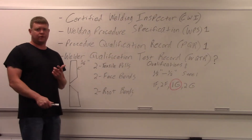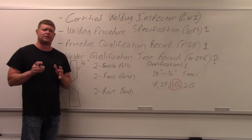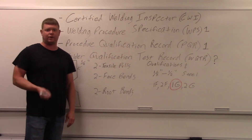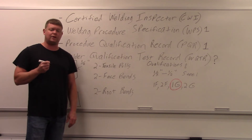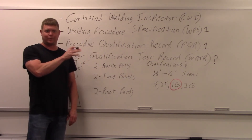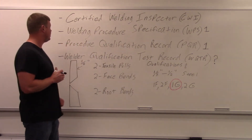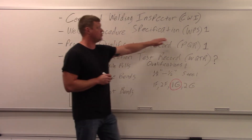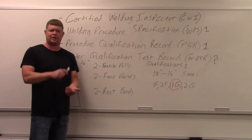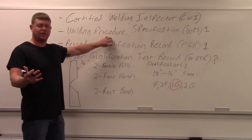Now that we know the code, thickness, materials, and positions, you move to the process of certification. The person that does that is a Certified Welding Inspector, or CWI. Most companies don't have a CWI on their payroll - you have to farm that out and it can be very expensive. If you do have a CWI, they'll figure out everything we just worked through. The CWI's first job is to write a Welding Procedure Specification, or WPS. The WPS contains all the variables for the welding process - machine settings, anything that has to do with that weld.